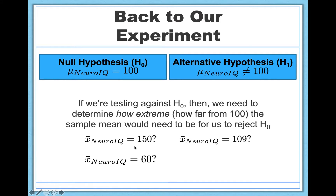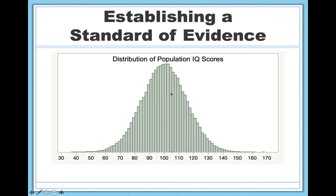But in other cases the decision would be very difficult. What if you found an average IQ in your sample after giving people neuro IQ for 30 days of 109 or 92? These are pretty close to 100, as is our sample of 105.9. Here the decision becomes very difficult — we don't really know. We need to establish the standard of evidence ahead of time: if I observe this result, I'm convinced. Anything less extreme than that, I am not convinced. And that's what we're going to learn how to do.